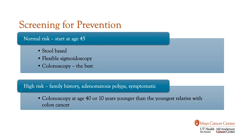When should we screen for colon cancer? For what we call normal risk — where there are no really high risk factors — we want to start at the age of 45. Although colonoscopy is the best procedure, there are other screening tools that can identify polyps or colon cancer, including a flexible sigmoidoscopy, which is a shorter colonoscopy, or a stool-based test that can be done at home. Most primary care doctors can talk to you about that.